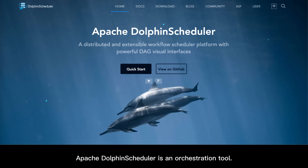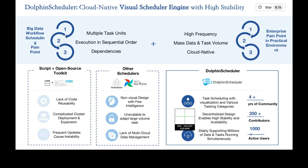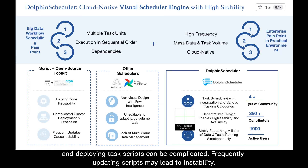Apache Dolphin Scheduler is an orchestration tool for Linux users. Scheduling tasks and scripts with Cron makes the scripts hard to manage, and deploying task scripts can be complicated frequently. Updating scripts may lead to instability.